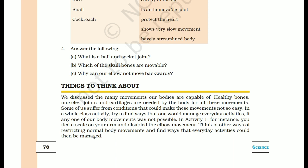Part (b): which of the skull bones are movable? The upper skull is fixed to the head with a fixed joint. The movable bone is the lower jaw. You can observe this yourself — when you open your mouth, only the lower jaw moves. The upper jaw cannot be moved because it has a fixed joint.